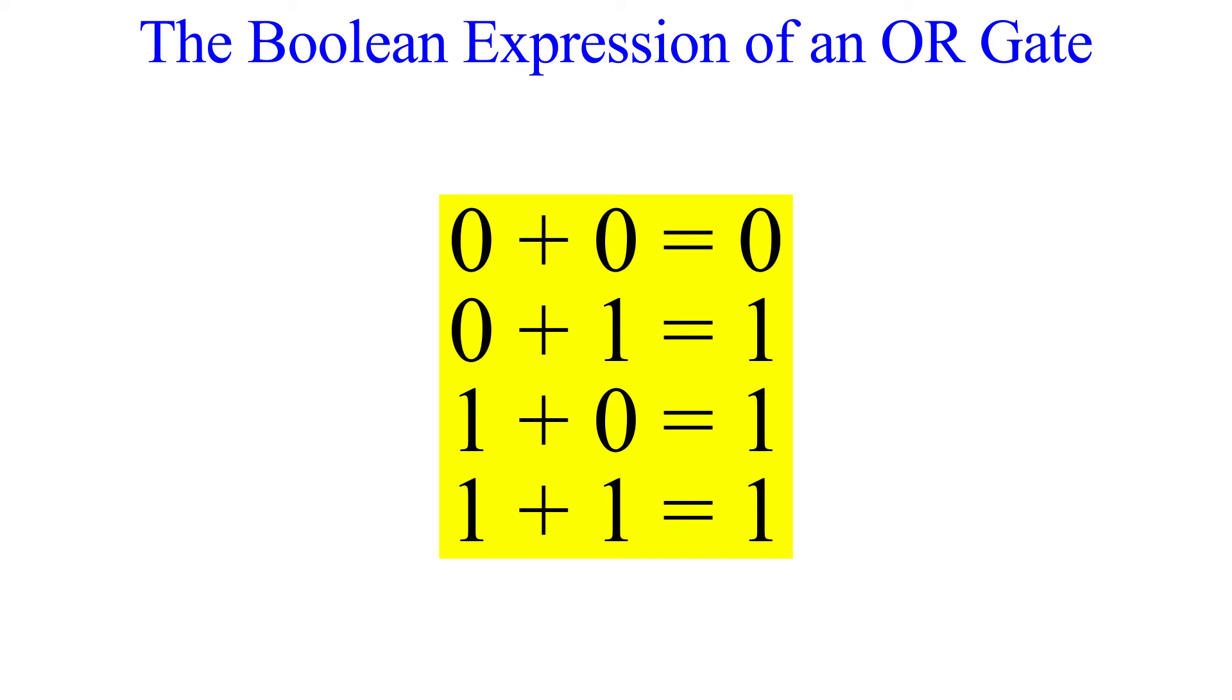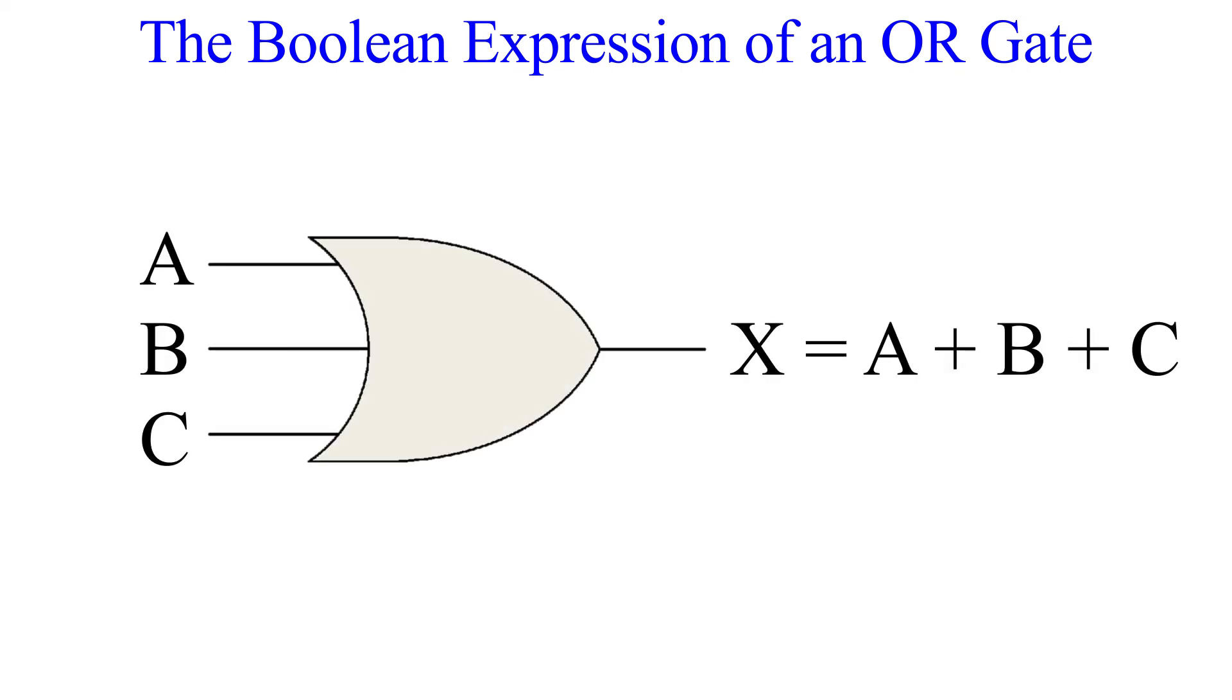Remember, this is Boolean addition, not regular addition. That last one can trip you up if you don't keep that in mind. So here is a three-input OR gate with inputs A, B, and C. The output, X, is given as a Boolean expression of its inputs. X equals A OR B OR C.